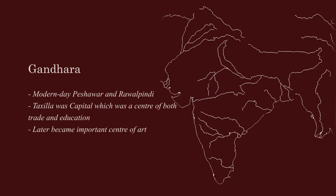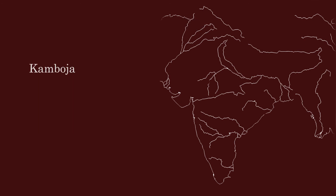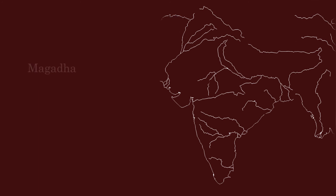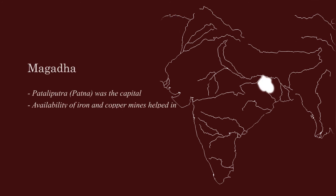Gandhar's present-day location has been suggested to be near Peshawar and Rawalpindi. It has been suggested that Cambodge was located near the north-western region adjacent to Gandhar. Magad was one of the most prominent states of all 16 Mahajanapadas, administered from the capital city of Patliputra.